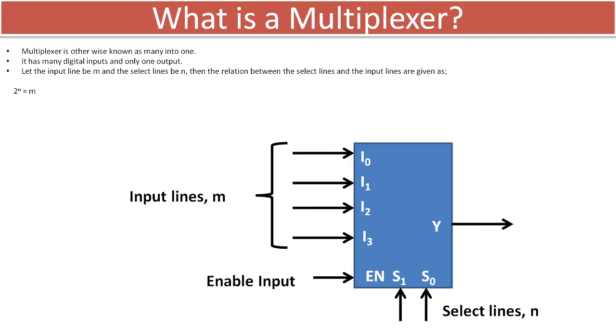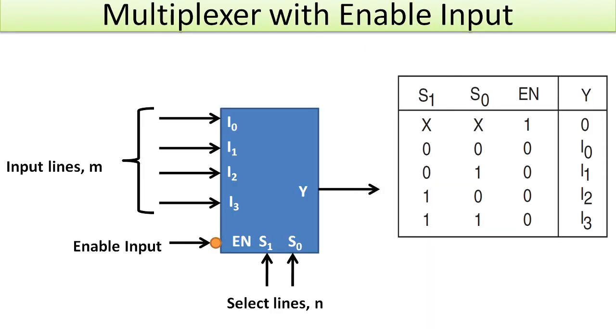Presently we will consider a circuit of a multiplexer which has an active low enable input. When the enable input is high, as shown in the table, whatever be the select line condition (the X here means don't care condition), the output will always remain at zero. That means none of the input lines is getting selected at the output, which means this particular multiplexer is presently disabled.